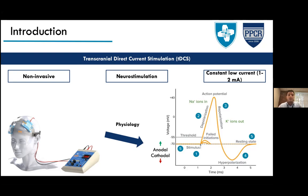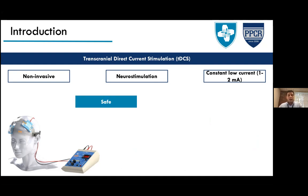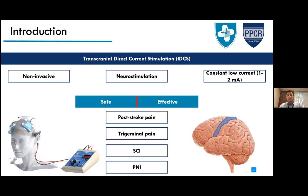An important concept is that tDCS works in a sub-threshold way — it does not directly activate neurons but increases or decreases the probability that a neuron will fire. tDCS is a safe and effective intervention for some chronic pain conditions, including post-stroke pain, trigeminal pain, spinal cord injury, and peripheral nerve injury.